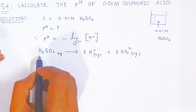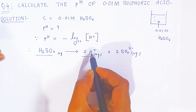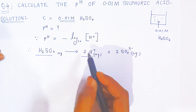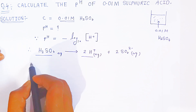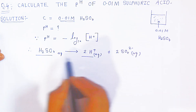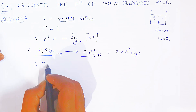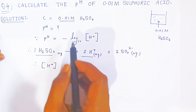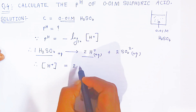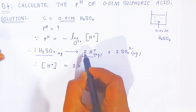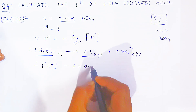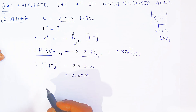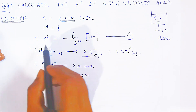The coefficient of H⁺ is two and the coefficient of sulfuric acid is one. Since the concentration of sulfuric acid is 0.01 molar, the concentration of H⁺ will always be twice that value. Therefore, from this equation, the concentration of H⁺ equals two times 0.01, which gives us 0.02 molar H⁺ concentration.